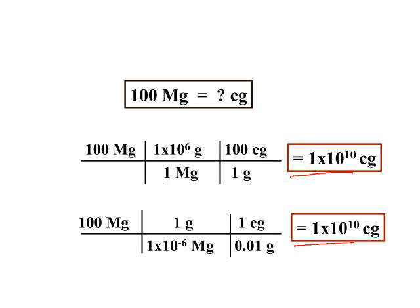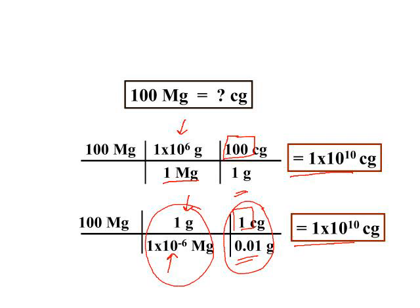whether we said 1 megagram is a million grams, or 1 gram is a millionth of a megagram, 1 gram is a hundred centigrams, or we simply could have said 1 centigram is a hundredth of a gram. These are both valid ways to work the problem.